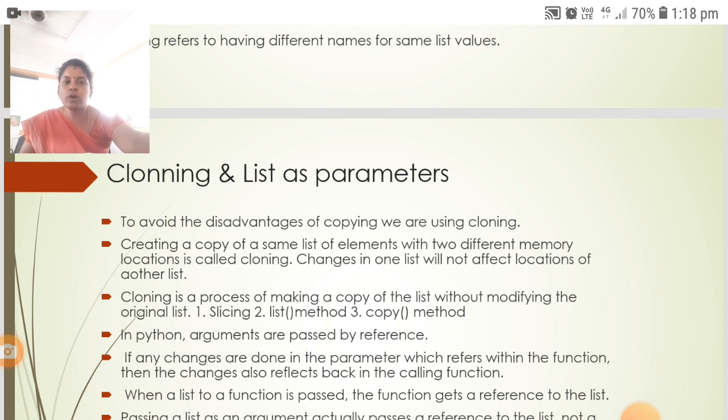Changes in one list will not affect locations of another list. Cloning is a process of making a copy of the list without modifying the original list using slicing or the copy method.